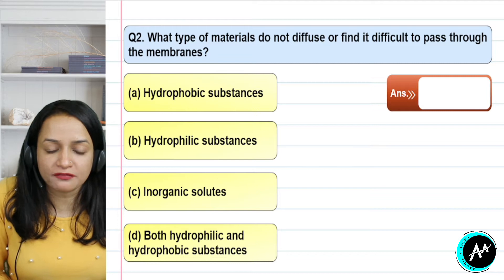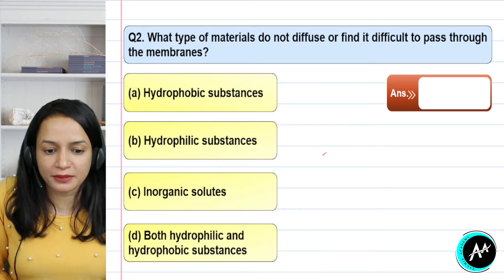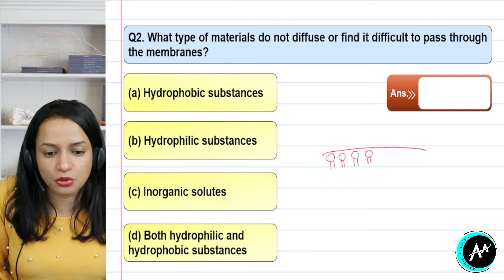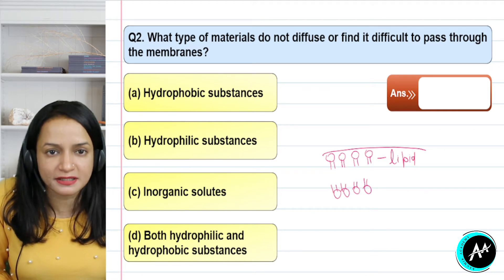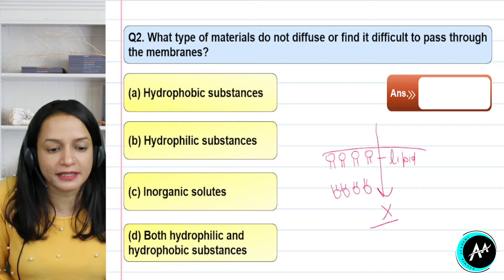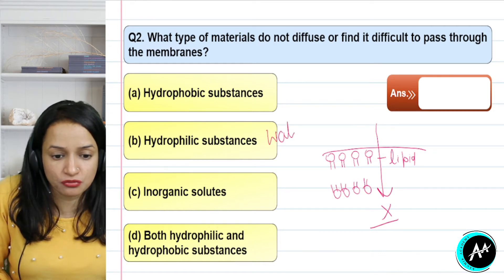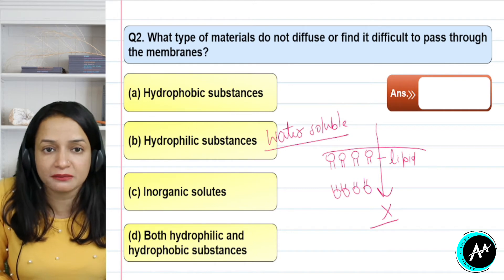Question 2: what type of material does not diffuse or finds it difficult to pass through the membrane? According to the fluid mosaic model, the membrane is lipid-based. The first option is hydrophobic substances — they are lipid soluble. The second option is hydrophilic substances — water-loving substances. They cannot easily cross the membrane because the membrane forms a water-resistant lipid barrier.